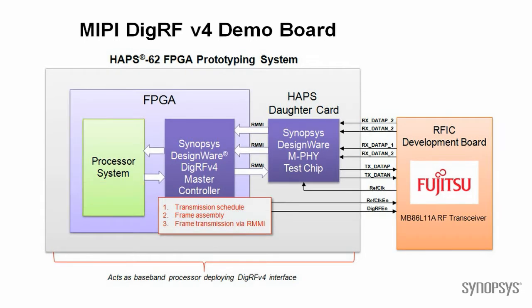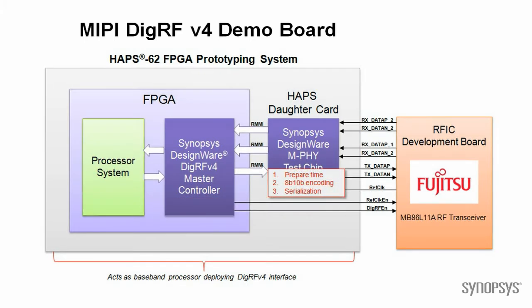The DIGAR FV4 controller schedules the transmission of the requested ICLC command, assembles the frame for transmission according to the DIGAR FV4 protocol, and accesses the M5 RMMI interface for transmitting the frame. The M5 activates the TX link by transmitting a preamble sequence, and then starts the serial transmission of data after 8b/10b encoding.